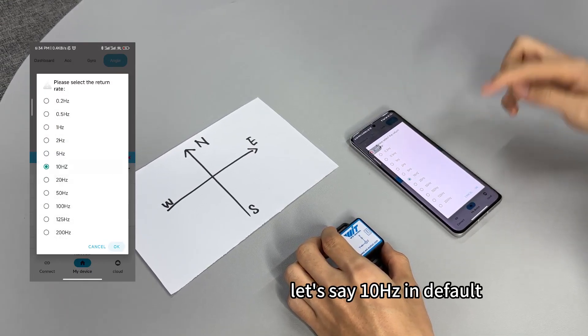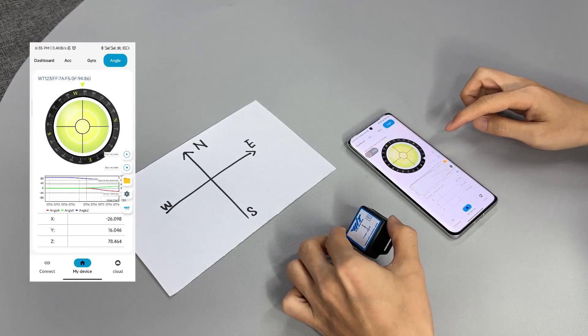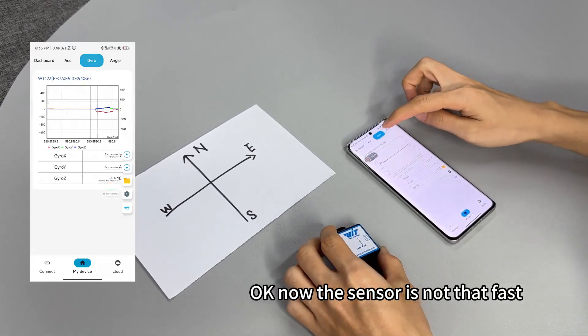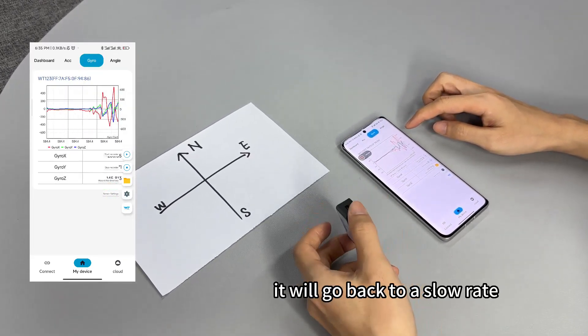Let's say 10 hertz in default. Okay, now the sensor is not that fast. It will go back to a slow rate.